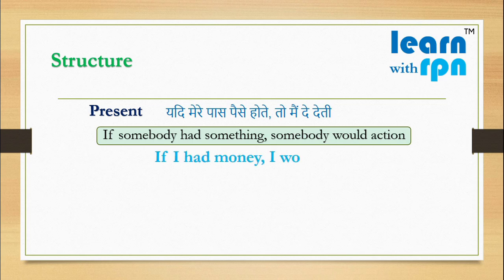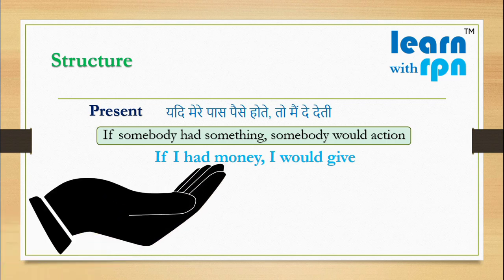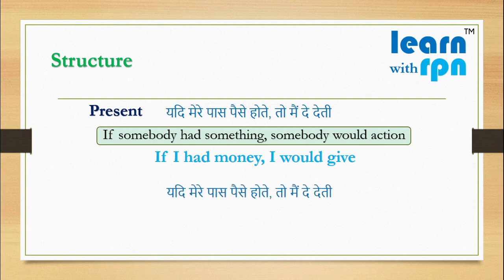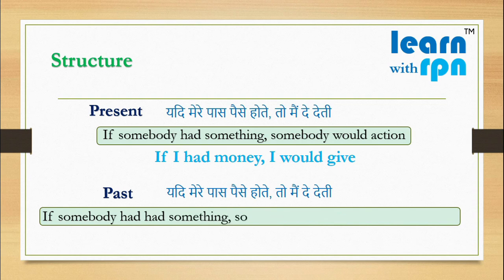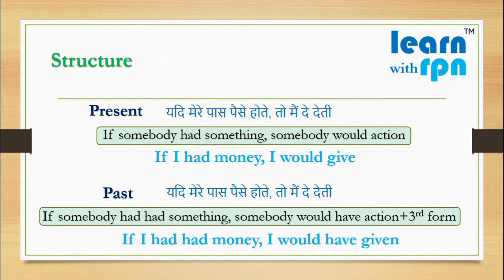According to this structure, I can speak: If I had money, I would give. My friend then reminded me that last month when she asked for money, I didn't give either. I again said, यदि मेरे पास पैसे होते, तो मैं दे देती. Here, the feeling is now related to the past. Structure for past condition: If somebody had had something, somebody would have action (third form). So as per structure: If I had had money, I would have given.